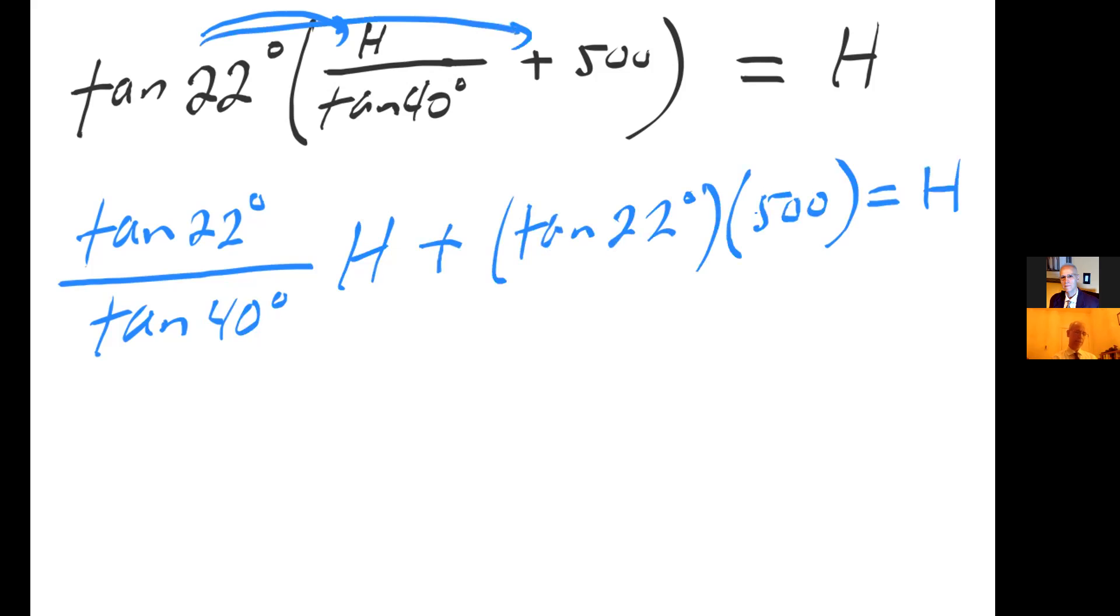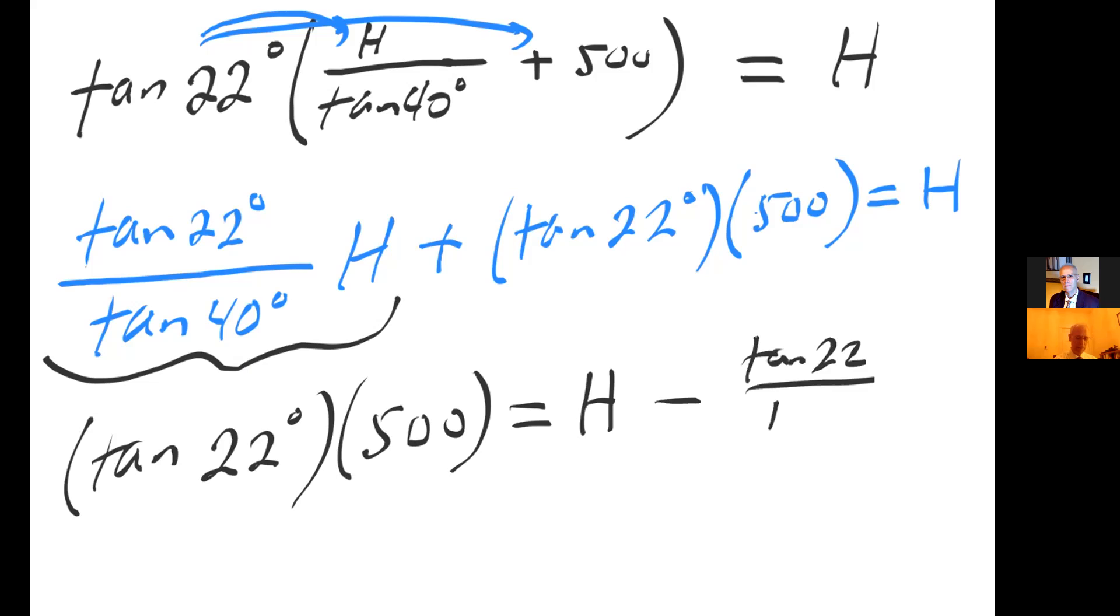So I distribute that tangent of 22 degrees. Now I'm going to subtract this from both sides. I will get the product of tangent of 22 degrees times 500 equal to H minus tangent of 22 over tan of 40 times H. And notice that here I can factor out an H.